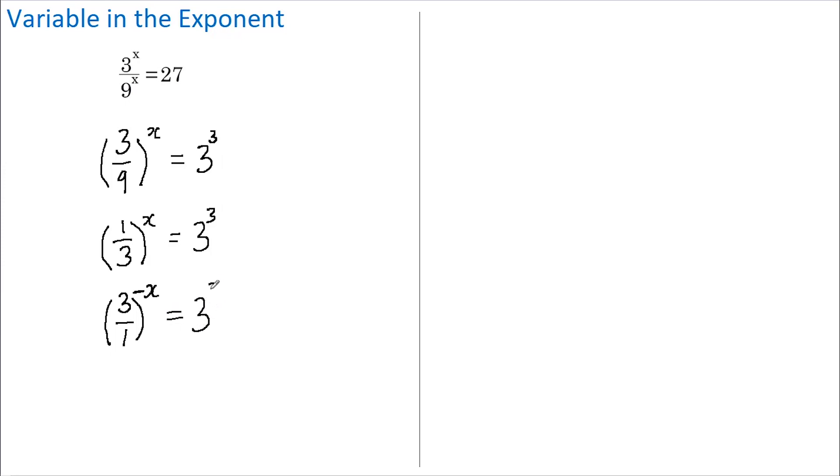3 divided by 1 is, of course, 3. So just tidying this up, we have 3 to the minus X equals 3 to the 3. And when we have equal bases like we have here—they're both 3—it means the powers must be equal.